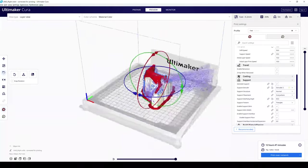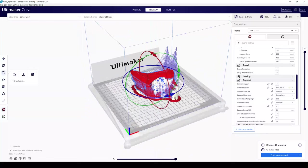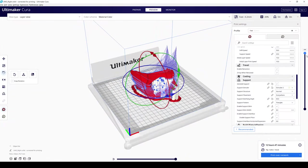These supports stop the model from moving during printing and they also allow for the printing of horizontal or steep structures. The model is then sent to the printer.